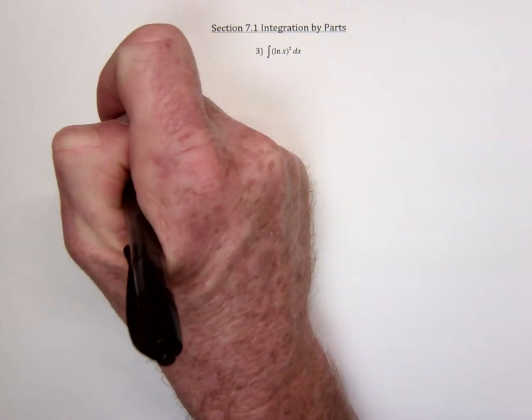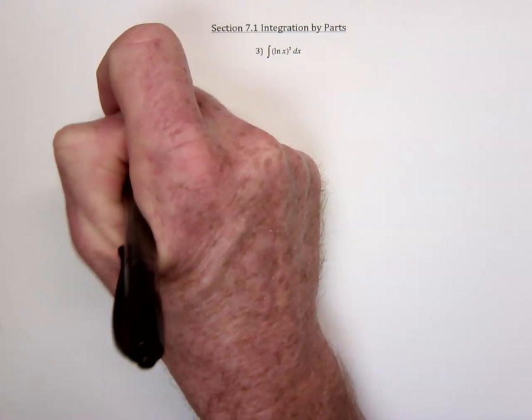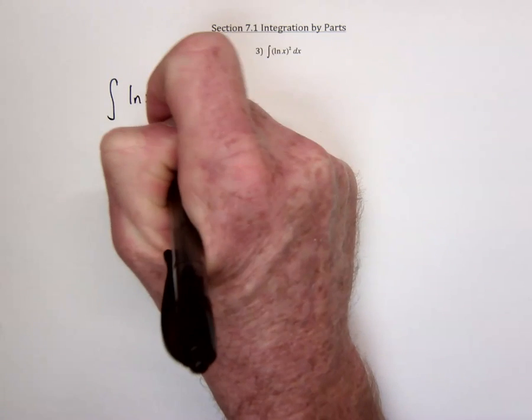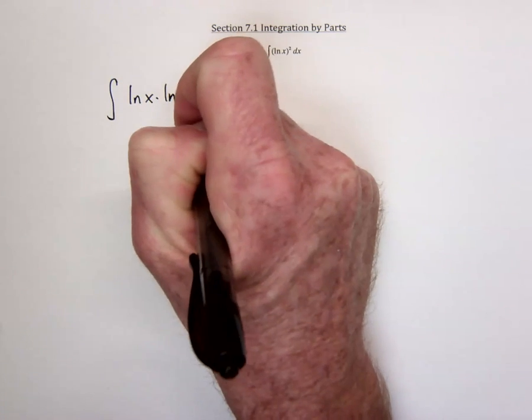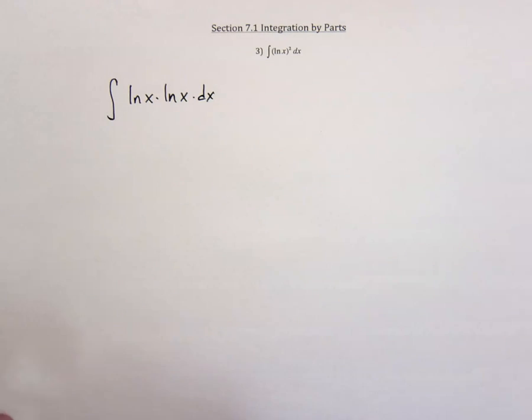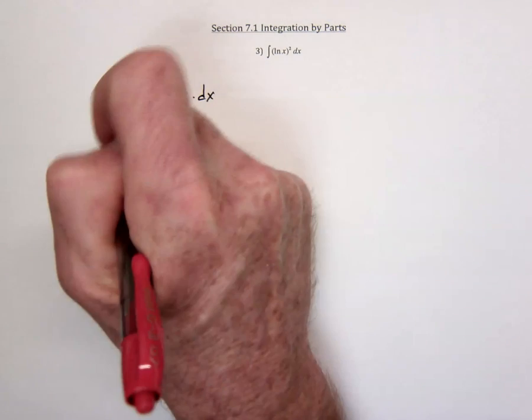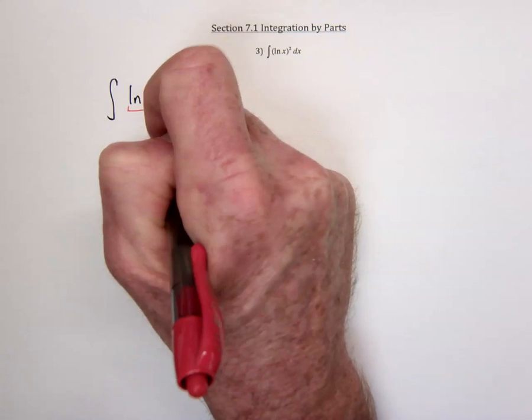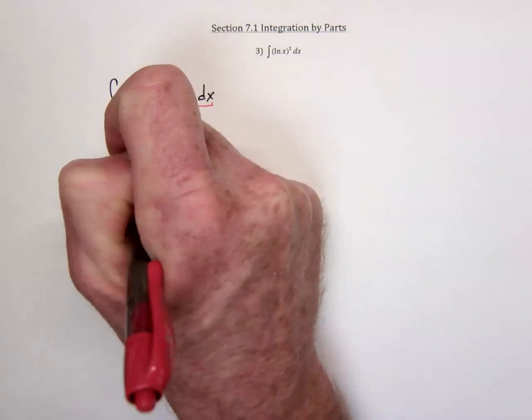So to integrate natural log of x being squared, what we'll do is factor it as the natural log of x times the natural log of x. And there isn't too much of a choice. We've got a u and a dv.